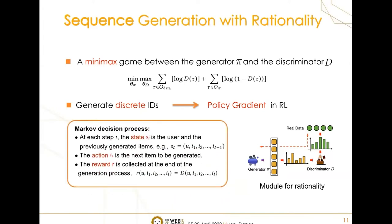Specifically, at each step T, the state ST is the user and the previously generated items. The action IT is the next item to be generated. The reward R is collected at the end of the generation and is actually the D value of the generated sequence, which indicates the rationality of the data.